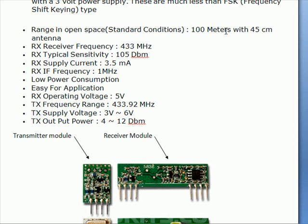The range in open space is about 100 meters with approximately a 45 cm antenna. The RX typical sensitivity is good at this frequency. Typical RX current is about 3.5 milliamps, RX IF frequency is about 1 megahertz, and it features low power consumption, making it easy for applications. RX operating voltage is about 5 volts.